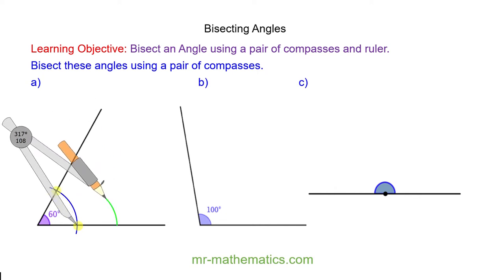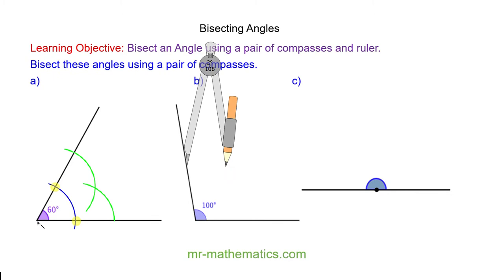So here is the first arc and the second arc and you can see the two green arcs intersect, and now I draw a line from the angle through the intersecting green arcs.